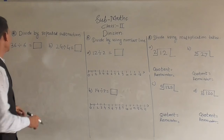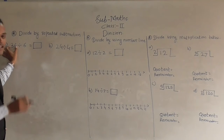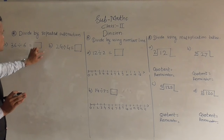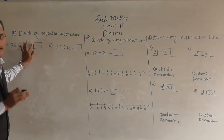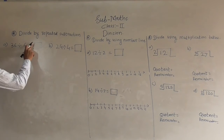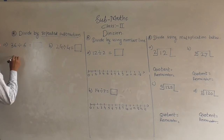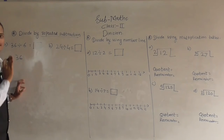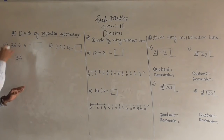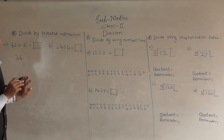Here 36 divided by 6. Here 36 is the dividend, 6 is the divisor, and we have to find out the quotient — the result of the division. This example we have to solve by using repeated subtraction. First write the dividend and every time subtract 6. When 0 comes, stop and count how many times you subtracted — that will be the quotient.